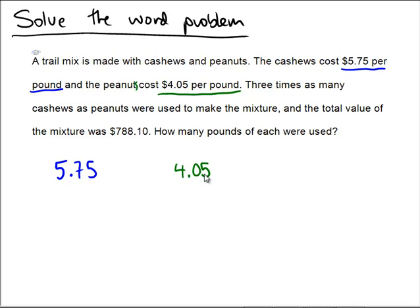But we do know that three times as many cashews as peanuts were used. So we don't know how many peanuts were used, but we might as well call that x to say we don't know yet, we're going to find out. And since the cashews were three times as many, that means they must have 3x.